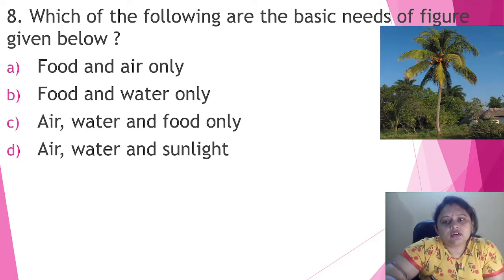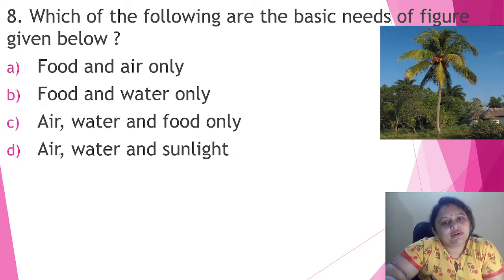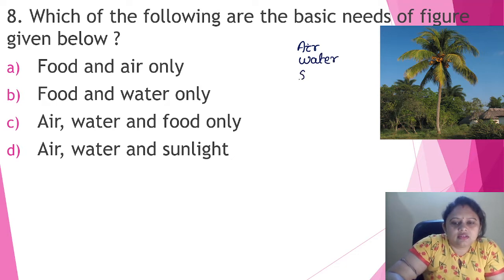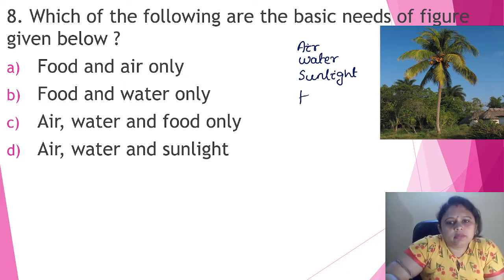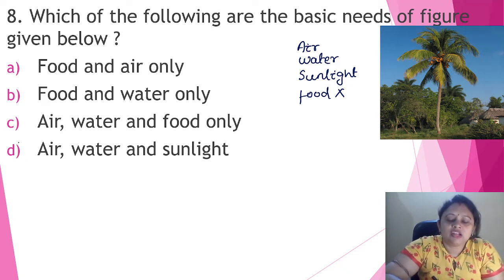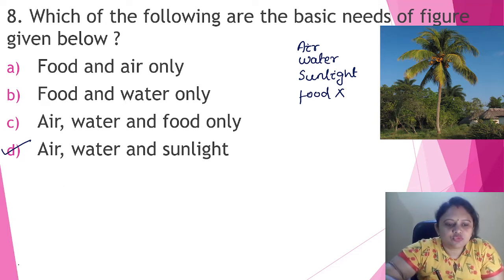Which of the following are the basic needs of the figure given below? In the figure there is a tree. What does a plant need — what are its basic needs? The basic needs are always air, water, and sunlight. Food is not a basic need because they can prepare their own food. The answer is present in option D, that is air, water, and sunlight.